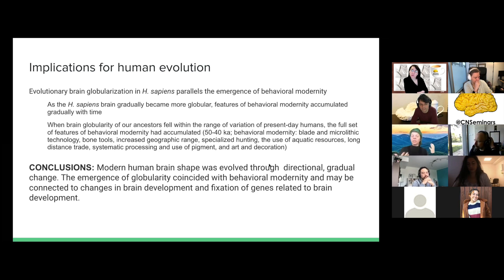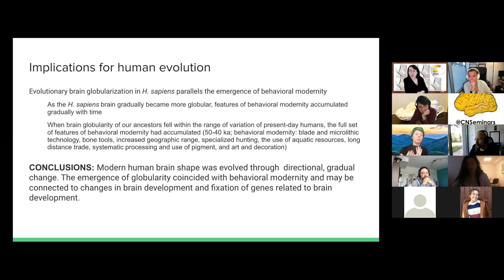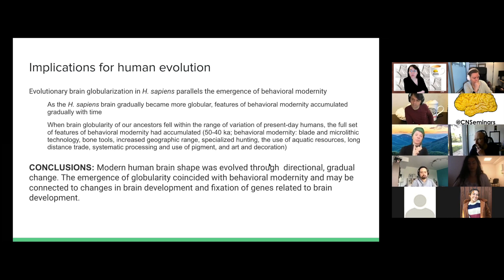Their main conclusion is that this represents a directional, gradual change toward increased globularity in the evolution of modern homo sapiens. They encourage people to look more at how this connects to behavioral modernity and to changes in brain development, and they make a good case for examining the genetics of brain development and how selection may have shaped this. Personally, I'd also be interested in genetic markers of facial development to determine whether this is driven by a cognitive mechanism or by mechanical or other selection pressures related to the face — chewing, breathing, and so on.